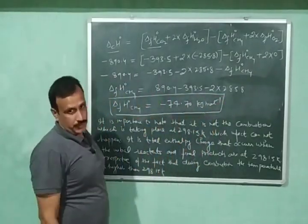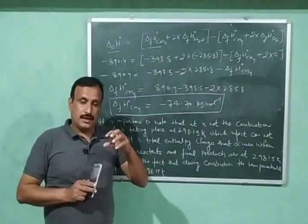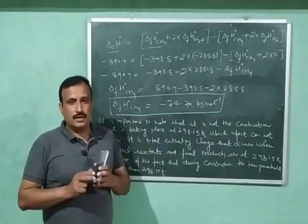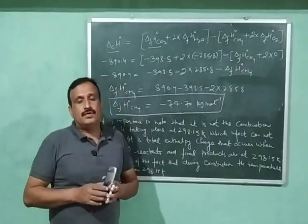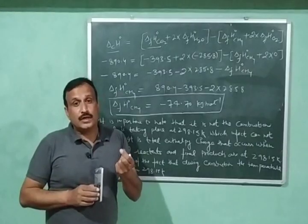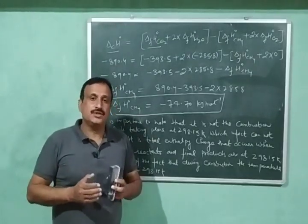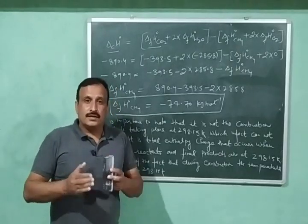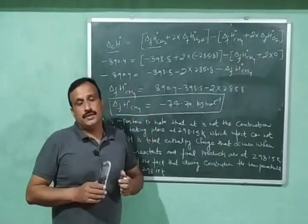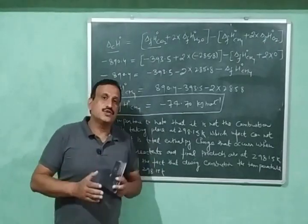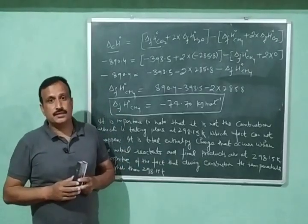After rearranging and solving, the standard enthalpy of formation of methane equals 890.4 minus 393.5 minus 2 × 285.8, which gives us minus 74.70 kJ per mole. In this way, we can calculate the standard enthalpy of formation of a compound using the standard enthalpy of combustion. Other applications include calculating the calorific value of food and fuels — like petrol, diesel, LPG — and estimating flame temperatures and bond energies. Please keep watching, like and share my videos, and subscribe to my channel. Thank you very much.